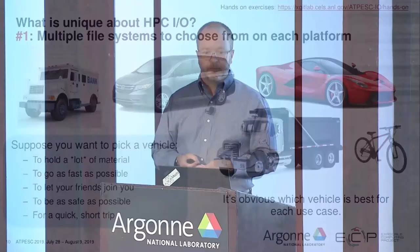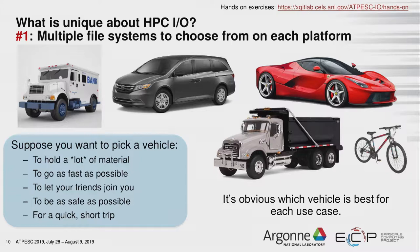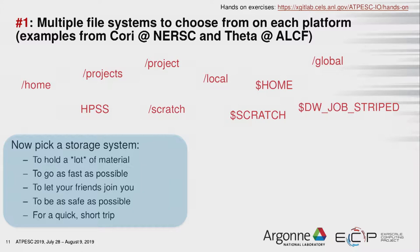The first thing unique about HPC I/O is that when you log on to a system, you have a lot of different storage systems to choose from. Using a metaphor: if you saw a lot of different vehicles outside and wanted to pick one good at a particular task — carrying a lot of material, taking your buddies along, going really fast, or getting somewhere nearby quickly — it's obvious from looking at the vehicles what they're good at. The question is how does that map to what you see on an HPC system when you look at the available file systems?